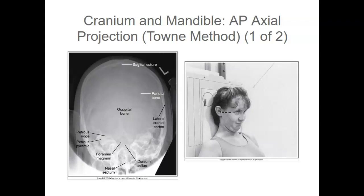For the cranium and petromastoid portion, the dorsum sellae and the posterior clinoids are seen within the foramen magnum without foreshortening and without superimposing the atlas's posterior arch. The sagittal suture and nasal septum are aligned with the long axis of the exposure field. The distances from the posterior clinoid processes to the lateral borders of the foramen magnum on both sides are equal, and the petrous ridges are at the same transverse level. The inferior occipital bone is at the center of the exposure field, and the outer cranial cortex, petrous ridges, dorsum sellae, and foramen magnum are all included within the exposure field.